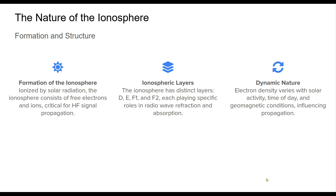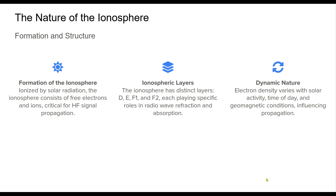The ionosphere is a key component of HF communication, created by the ionizing effects of solar radiation on the Earth's upper atmosphere. This region allows for the bending or refraction of radio waves, enabling long-distance communication. The ionosphere comprises layers — D, E, F1, and F2 — that vary in density and function.